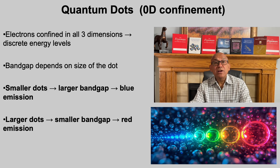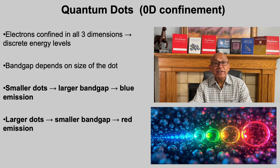Quantum dots are zero-dimensional nanocrystals where electrons are confined in all three directions. This confinement produces discrete energy levels, much like the particle in a box model we discussed earlier. A key consequence is that the band gap is not fixed — it depends on the size of the quantum dot. Smaller dots have a larger band gap and therefore emit higher energy, bluer light. Larger dots have a smaller band gap and emit lower energy, red light. This direct link between size and color is a hallmark of quantum confinement.